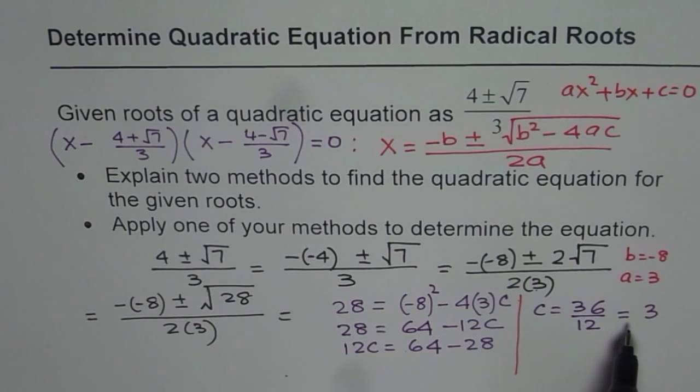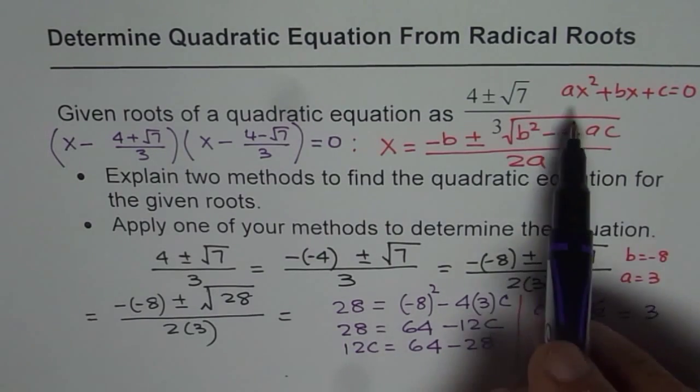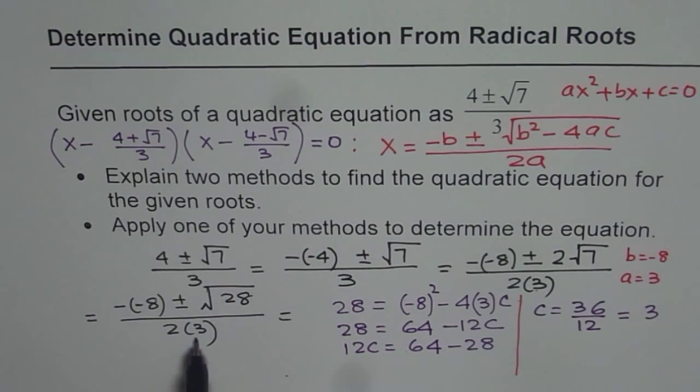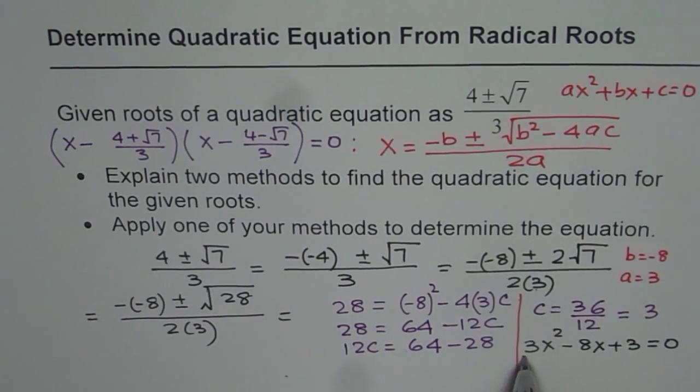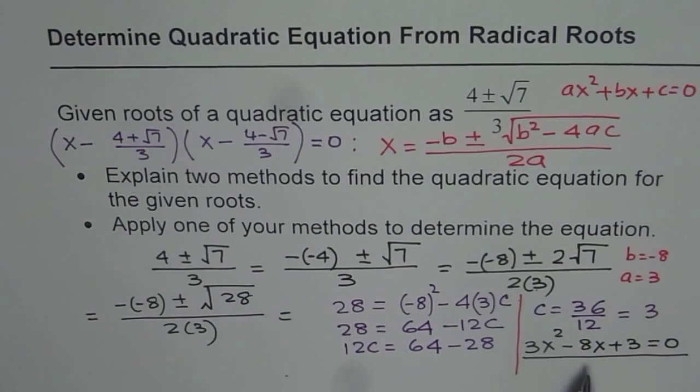Now we know a, b and c. a is 3 for us, b is minus 8 and c is 3. Therefore the equation is 3x squared minus 8x plus 3 equals 0. So that becomes a quadratic equation whose roots are 4 plus minus square root 7 over 3.